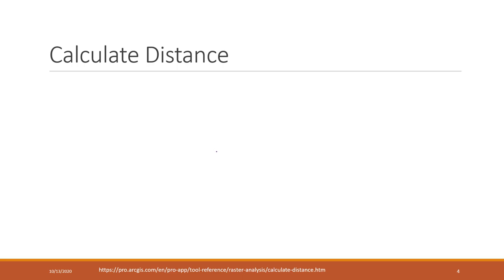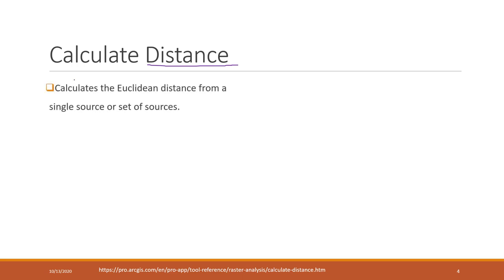Let's talk about the second type of the most commonly used raster data analysis, which is called Calculate the Distance. You can define different types of distance. We can calculate the distance from a source or set of sources — it can be a single place or multiple locations.